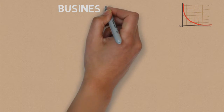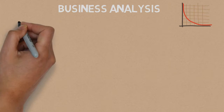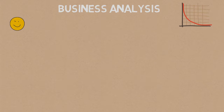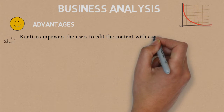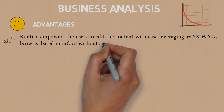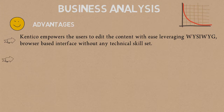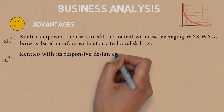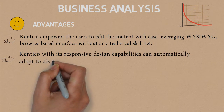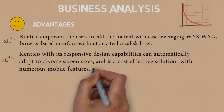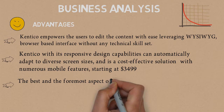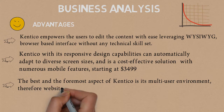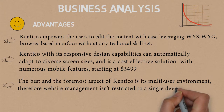Business Analysis. Advantages: Kentico empowers users to edit content with ease leveraging a WYSIWYG browser-based interface without any technical skill set. With its responsive design capabilities, Kentico can automatically adapt to diverse screen sizes and is a cost-effective solution with numerous mobile features starting at $3,499. The best aspect of Kentico is its multi-user environment, so website management isn't restricted to a single developer.